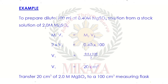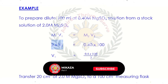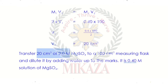For example, suppose we have a MgSO4 solution that is 2 molar, and we need a 0.4 molar solution of 100 ml. Using the formula M1V1 = M2V2: M2 is 0.4, V2 is 100, M1 is 2 molar. Solving gives V1 = 20 cm³. This means if we take 20 cm³ of the 2 molar solution and add water to make 100 cm³, we get a 0.4 molarity solution.